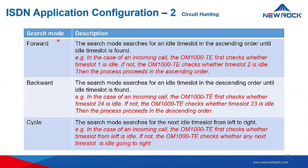These are the search modes and their descriptions. When you select forward, the search mode looks for an idle time slot in ascending order — for example, the OM1000 checks time slot 1 first, then 2, then 3, 4, 5. If backward, it searches from the highest time slot downward, e.g., time slot 24 then 23. If cycle, it searches for the next idle time slot from left to right.